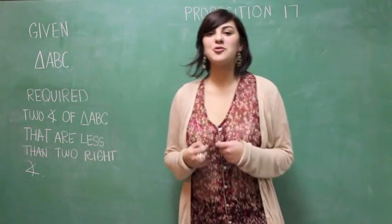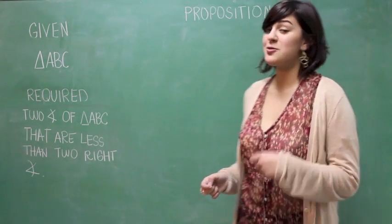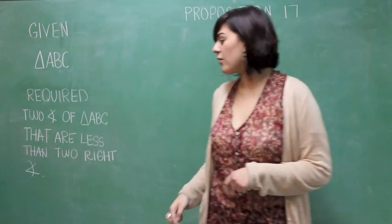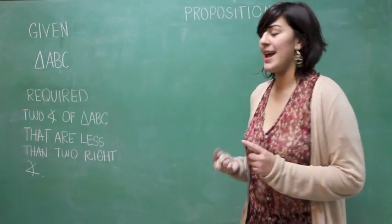What is given is the triangle ABC, and what is required is to demonstrate two angles of the given triangle that are less than two right angles.